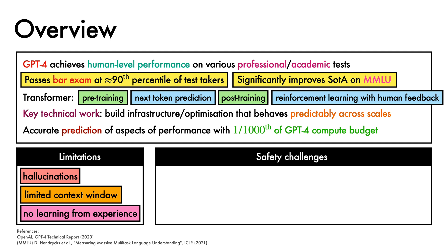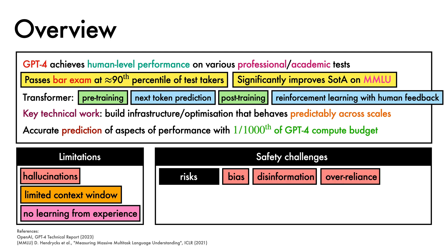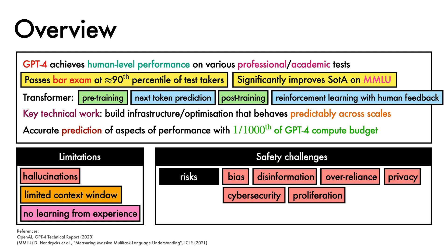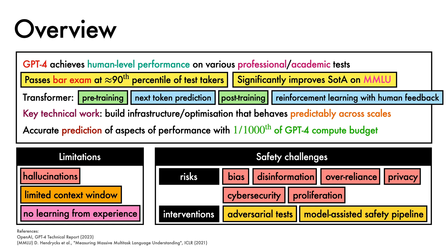The OpenAI authors note that the capabilities and limitations of GPT-4 raise some major safety challenges. They therefore devote significant effort to examining model risks around topics like bias, disinformation, over-reliance, privacy, cybersecurity, and proliferation, and describe interventions that were taken to mitigate deployment harms, which included adversarial tests with domain experts and the use of a model-assisted safety pipeline.